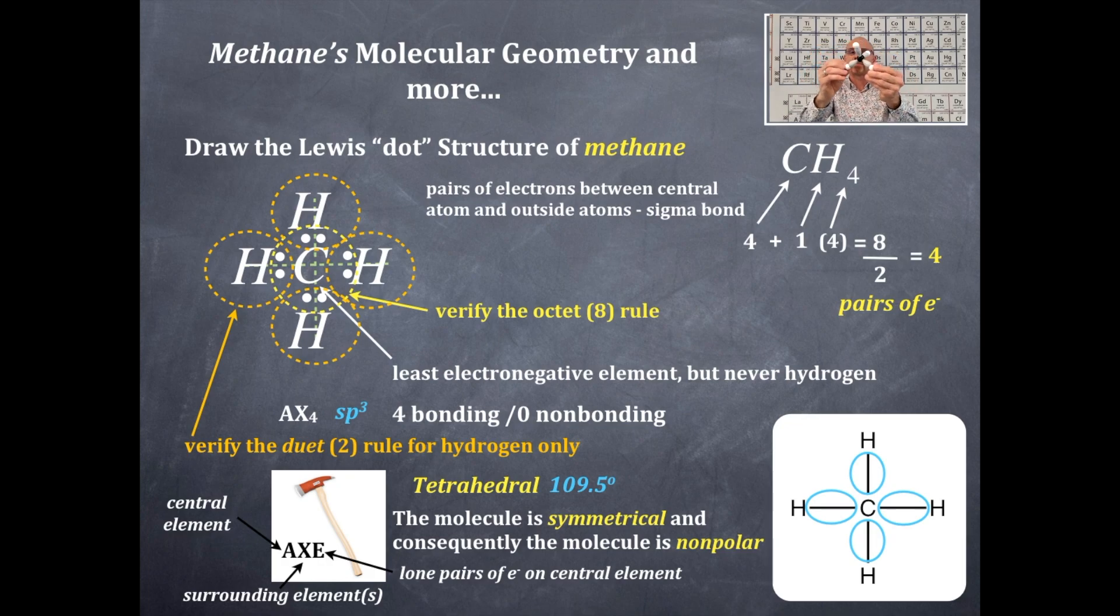Here is methane for you. This is a beautiful structure. That's why this is tetrahedral. Remember, you drew that Lewis dot structure and it looks flat, but you need to think three-dimensionally. This is tetrahedral. That is everything you need to know about methane right there on one slide.